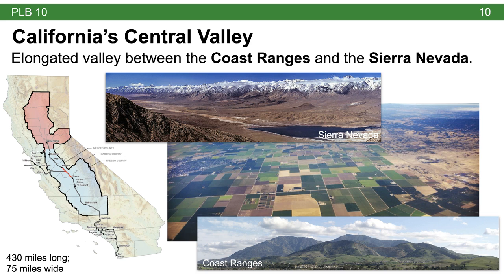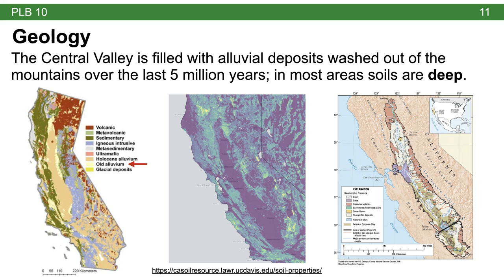The Central Valley is 430 miles long and 75 miles wide. A good question is why is California's agriculture so focused here? One reason is its geology. The Central Valley is essentially filled with alluvial deposits washed out of the mountains over the past 5 million years. In most areas, the soils are very deep. A soil map of California shows the Central Valley is filled with old alluvium, and a depth map confirms a rich depth of soil throughout.